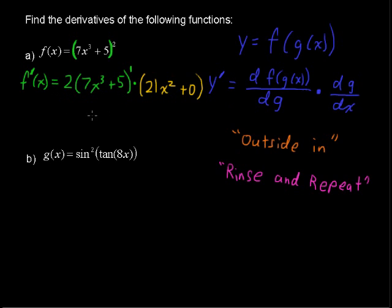So now we could simplify all this stuff, and I'm going to go ahead and do that, just a little algebra at this point. This whole quantity is to the first power, so we can just distribute that 2 through, and we've got 14x to the third plus 10, and that is still being multiplied by 21x squared.